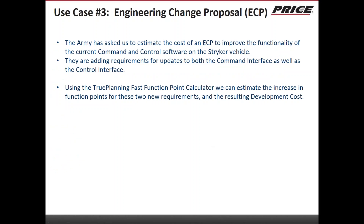Use case number three is an engineering change proposal. The Army has asked us to estimate the cost of an ECP to improve the functionality of the current command and control software on the Stryker vehicle. They're adding requirements for updates for both the command interface as well as the control interface. We can use the True Planning fast function point calculator to estimate the increase in function points for these two new requirements and hence the increase in software development costs.